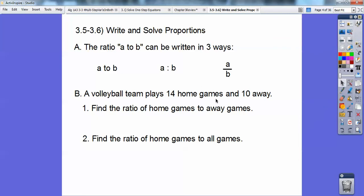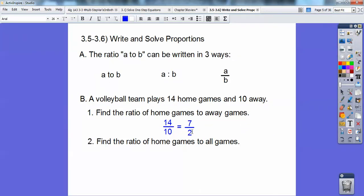I'm going to go home games to away games. Home games are going to be on top, so 14. And then to away games, 10 is going to be on bottom. So 14 over 10. And then go ahead and reduce that. 2 goes into 14 seven times and 2 goes into 10 five times. So that should be 7 over 5.